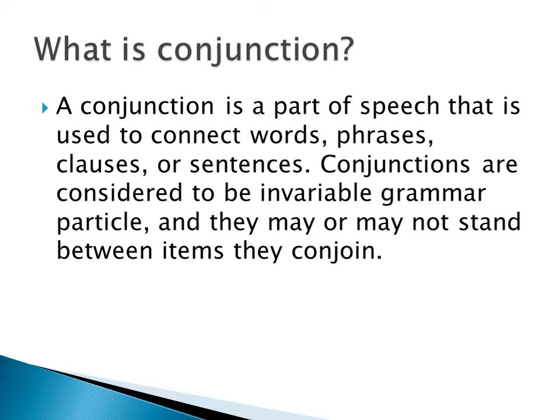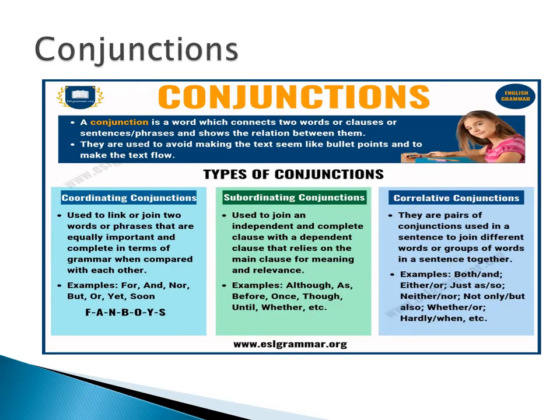What is a conjunction? A conjunction is a part of speech that is used to connect words, phrases, clauses, or sentences. Conjunctions are considered to be invariable grammar particles, and they may or may not stand between the items they conjoin. A conjunction is a word which connects two words, clauses, sentences, and phrases and shows the relation between them. They are used to avoid making the text seem like bullet points and to make the text flow.